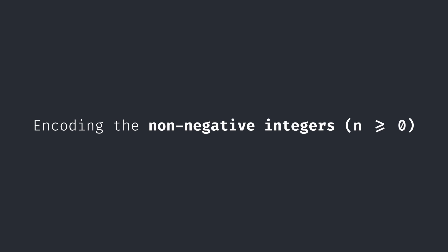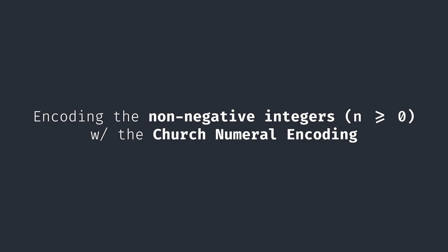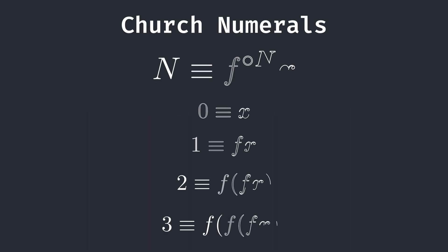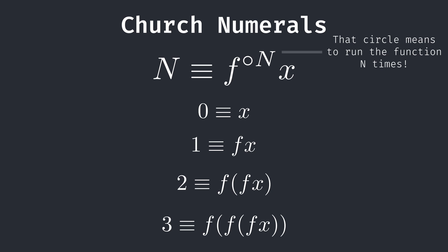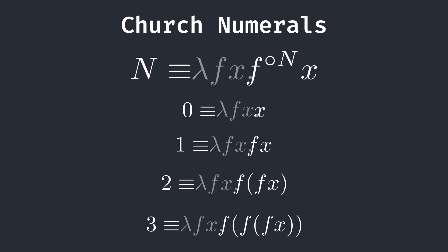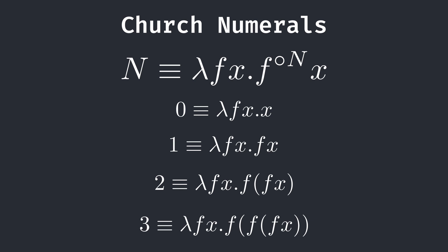Now, let's define the non-negative integers with what is known as the church numeral encoding. A number n in this system is written as a function f applied n times to a value x. The actual function and value are passed as arguments to the number function. With this definition, a church numeral, say 3, for example, literally means do something three times.